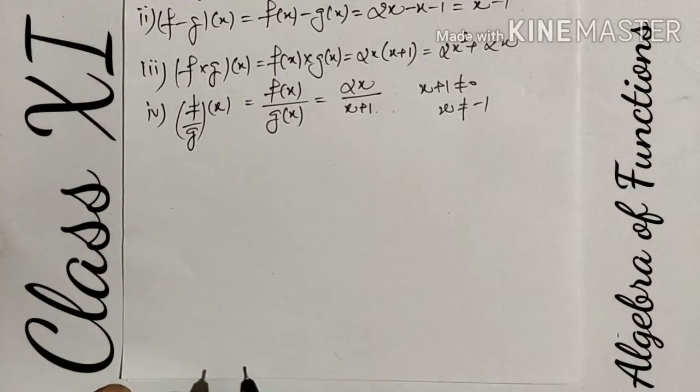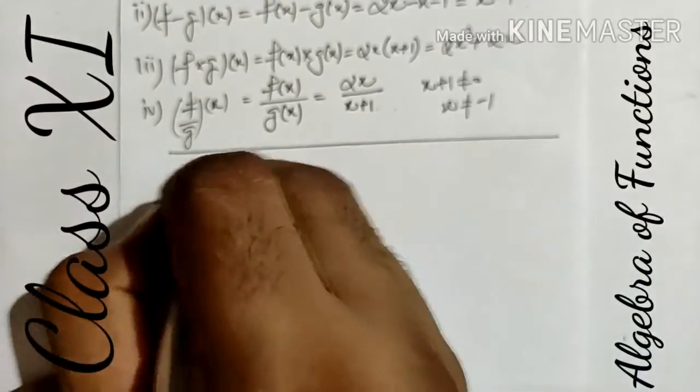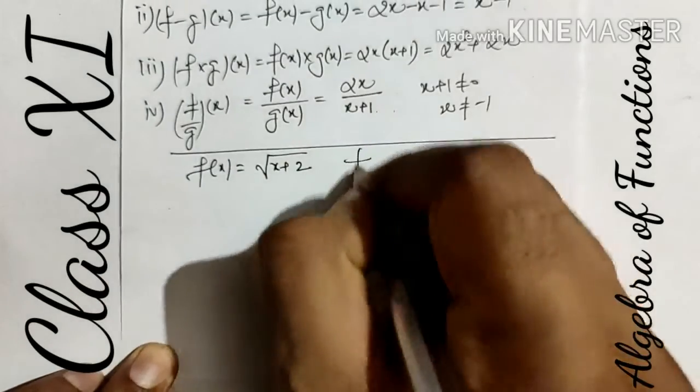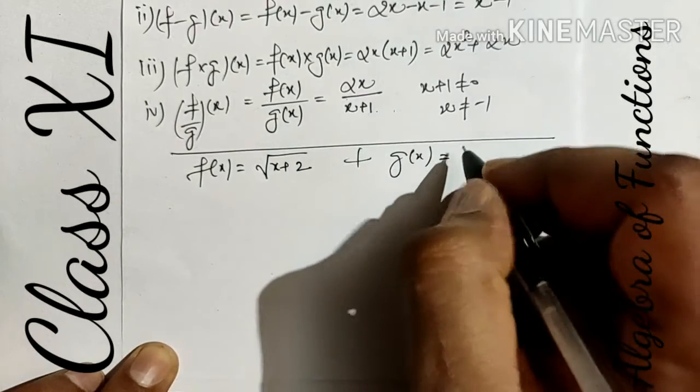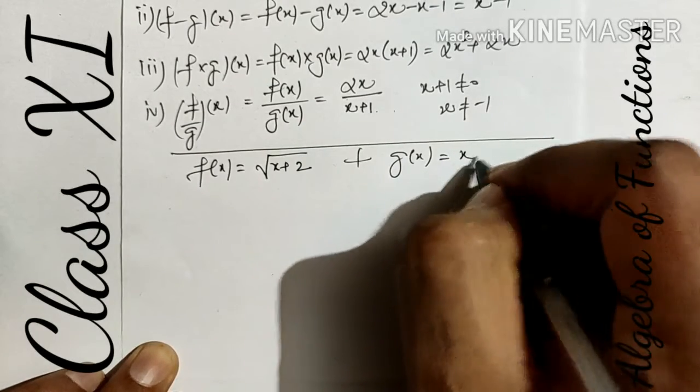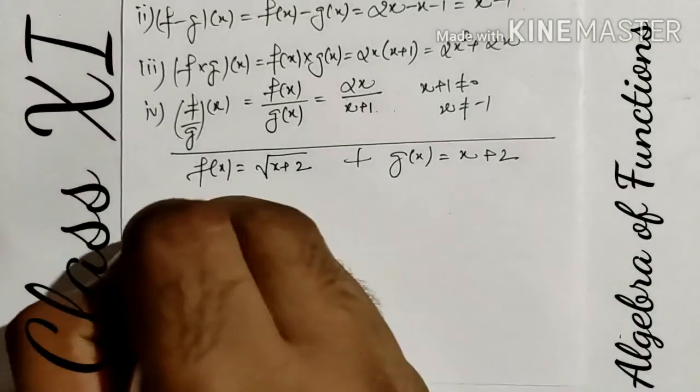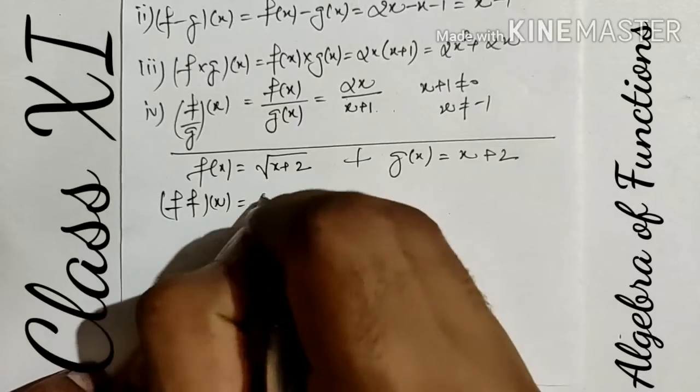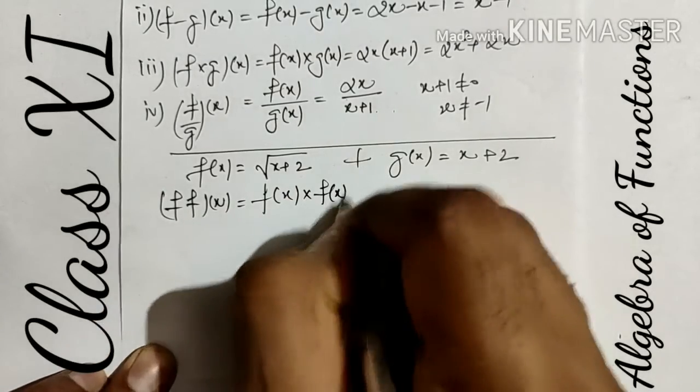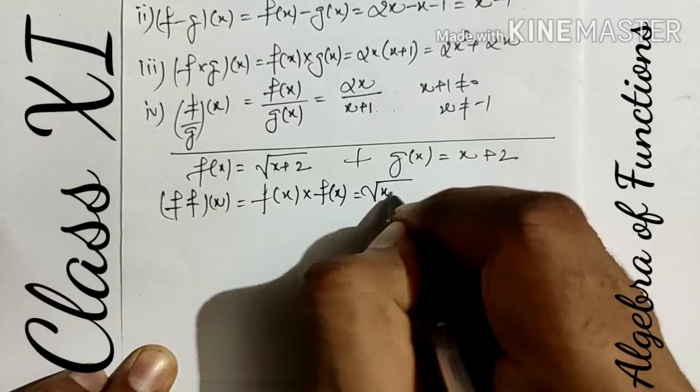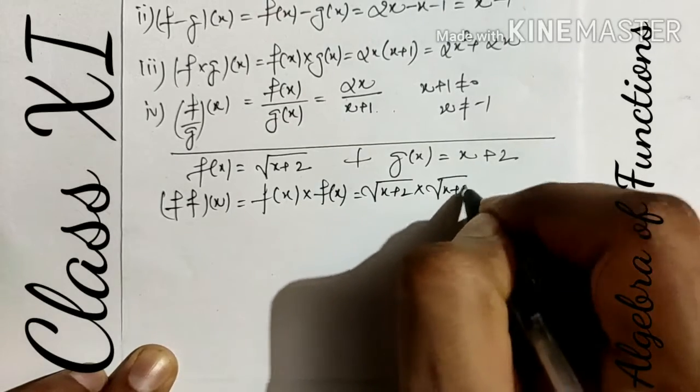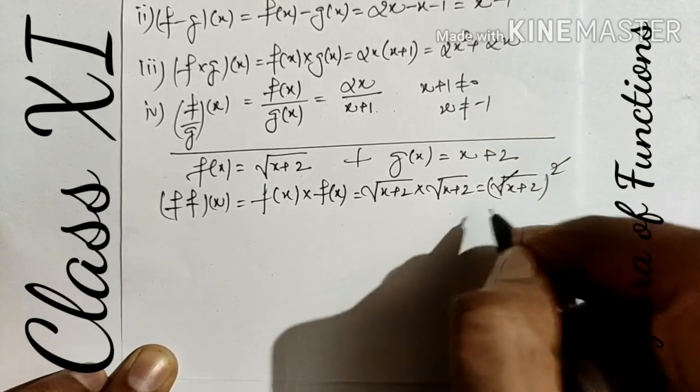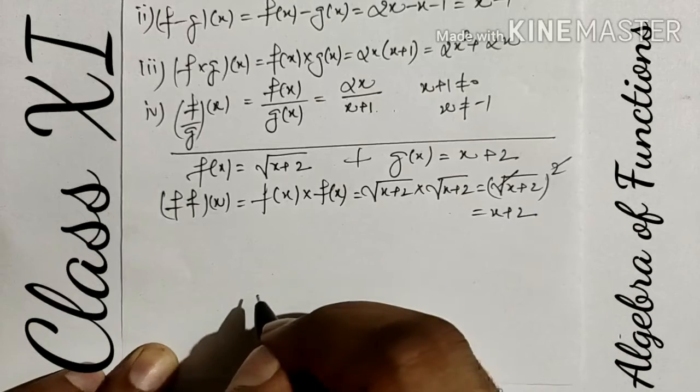We are taking another example: f(x) = √(x+2) and g(x) = x+2. We have to find f·f, so we need variable x. It becomes f(x) multiplied by f(x), which means √(x+2) multiplied with √(x+2). We get (√(x+2))². Square cancels out the square root, so final answer becomes x+2.